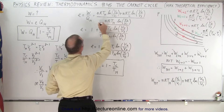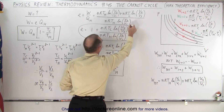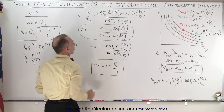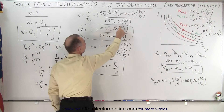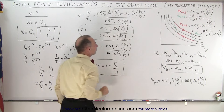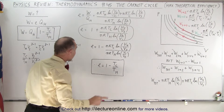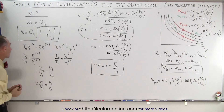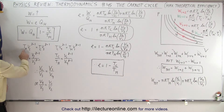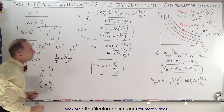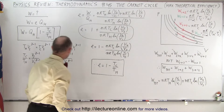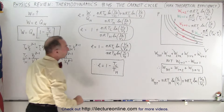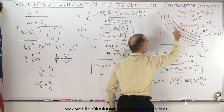Let me circle this, because this is important. The nR terms cancel out. We have T cold over T hot, a plus sign, the natural log of V4 over V3, and the natural log of V2 over V1. Now we go back to the adiabatic process, and we realize that for an adiabatic process, T_hot times V2 to the gamma minus 1 must equal T_cold times V3 to the gamma minus 1 — that's going from 2 to 3. We can do the same thing for the other adiabatic process.